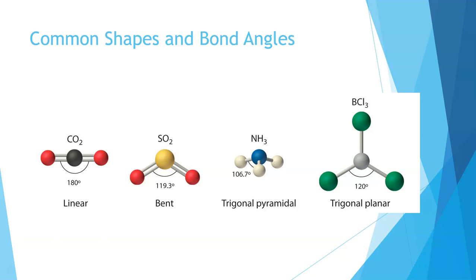To summarize the shapes: linear molecules have bond angles of 180 degrees. SO2, which is bent, has an angle of 120 degrees or less — much smaller in water, which is about 104 degrees. Ammonia gives us 106.7 degrees and is trigonal pyramidal. Trigonal planar has bond angles of 120 degrees. And tetrahedral gives us 109.5 degrees.